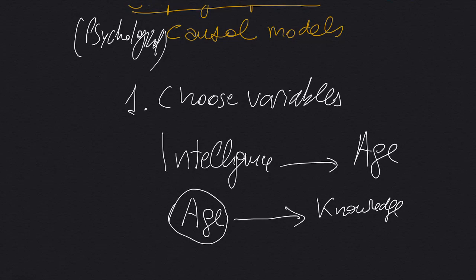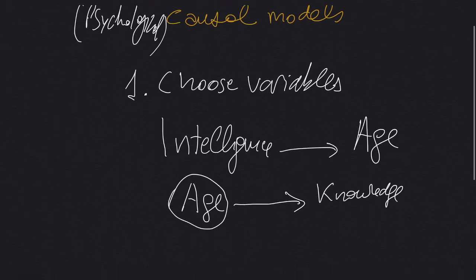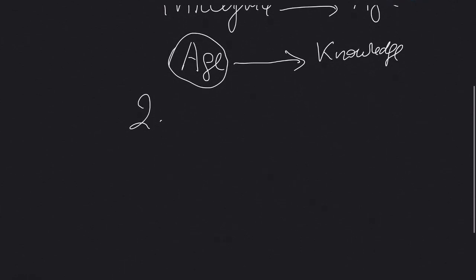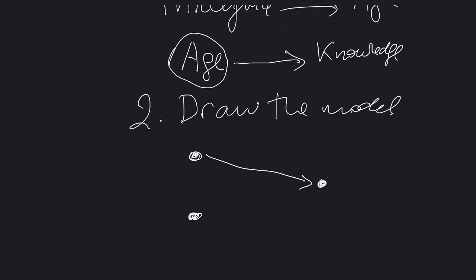So the step two is to draw the model. And let's start with the complex model. So the complex model has to have two variables. One variable, two variables that are causal variables, and one variable that is the consequence. So basically has to have this structure. Okay?